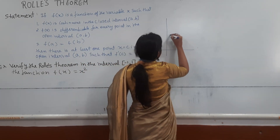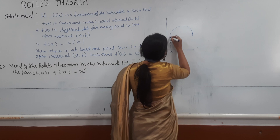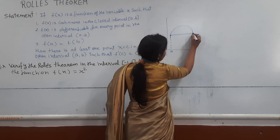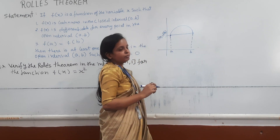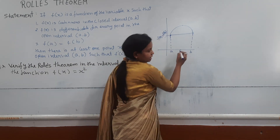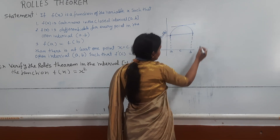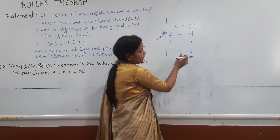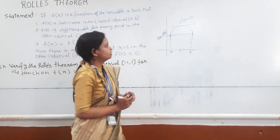Suppose you have a curve, and one point is a and another point is b. Here we have a function on [a, b], and f(a) is equal to f(b). So now there exists a point c, and when you draw a tangent at this point c, it will be parallel to the x-axis. The tangent means the derivative of the function is zero at that point. So this is Rolle's theorem.